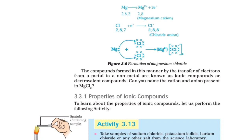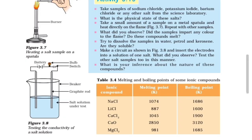Properties of Ionic Compounds: Activity 3.13: Take samples of sodium chloride, potassium iodide, barium chloride, or any other salt from the science laboratory. What is the physical state of these salts? Take a small amount on a metal spatula and heat directly on the flame (figure 3.7). Repeat with other samples. What did you observe? Did the samples impart any colour to the flame? Do these compounds melt? Try to dissolve the samples in water, petrol, and kerosene. Make a circuit as shown in figure 3.8 and test conductivity of a salt solution. What is your inference about the nature of these compounds?